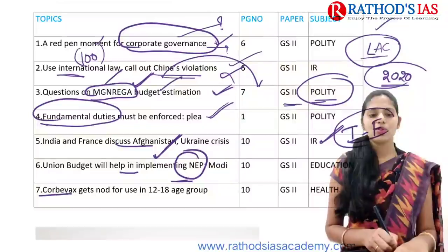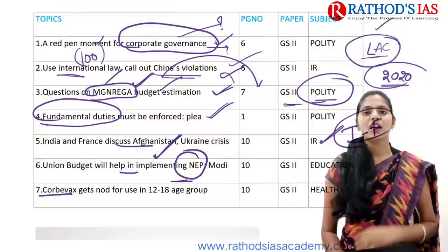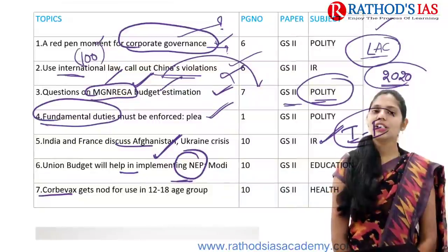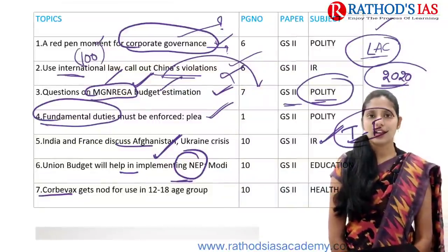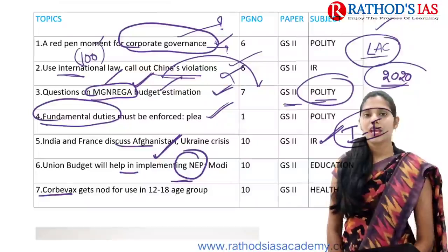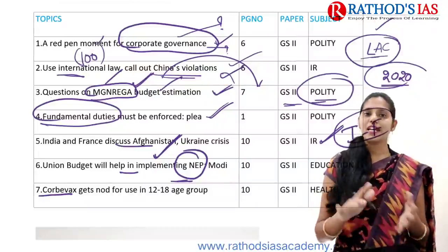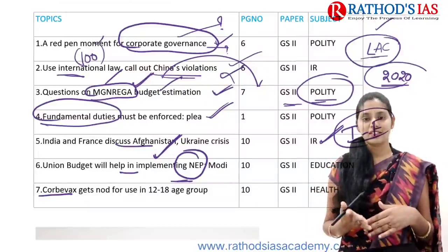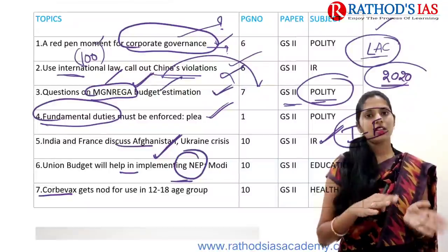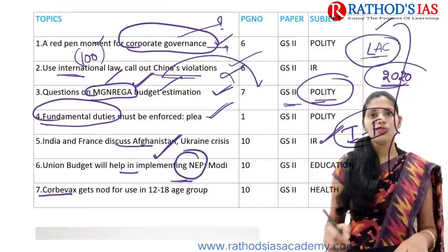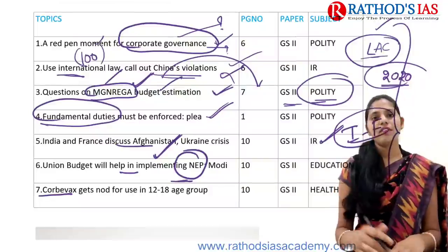The next topic is about Corbevax, a COVID-19 vaccine. This Corbevax has mainly got emergency use authorization and can now be used for the age group of 12 to 18 years. This topic is important from Science and Technology, where we can study about vaccines and their mechanism of action. We can also connect this topic with health. So these are the 7 topics we are going to discuss.